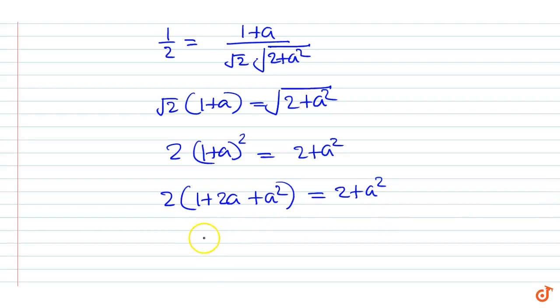Canceling 2 from both sides we get 4a plus 2a squared equals a squared.